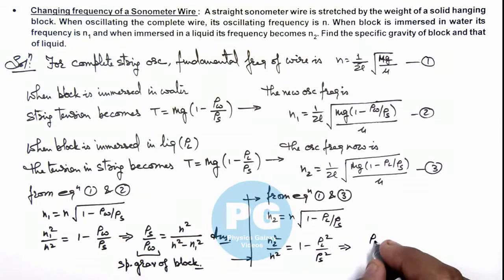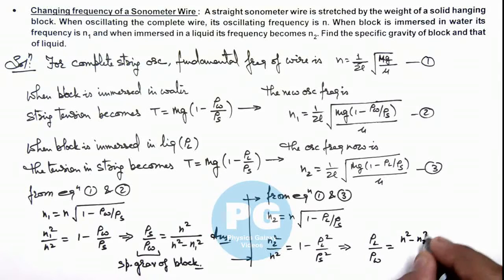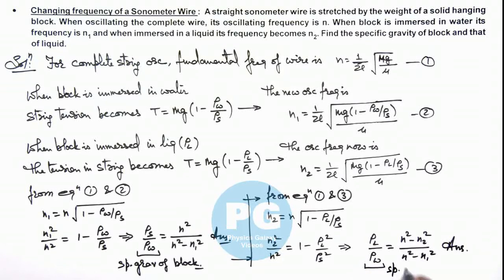After simplifying, we get ρ_liquid/ρ_water = (n² - n₂²)/(n² - n₁²). This is the second result of this problem: the specific gravity of the liquid.